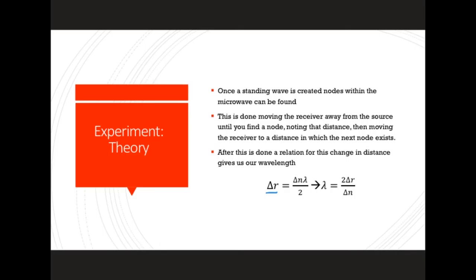We can rearrange it to solve and find the relation for our wavelength. If we only move back one node, then our delta n is just equal to one. So our wavelength will be equal to two times the distance that we moved to get to that node.